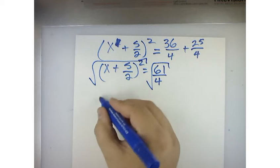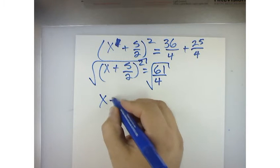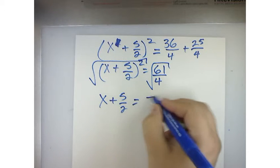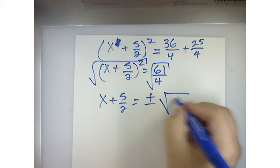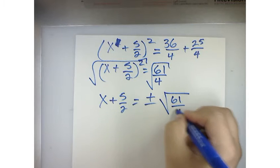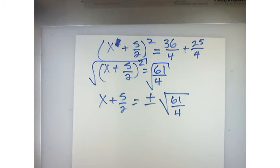Over here I'm going to get x plus 5 over 2 is equal to plus or minus the square root of 61 over 4. What problem was that? 14.